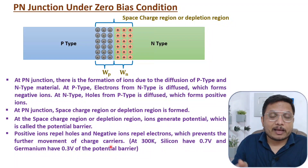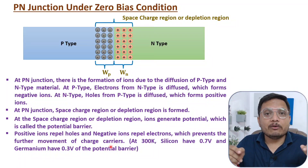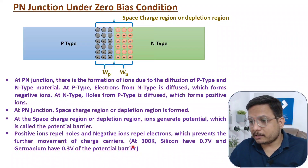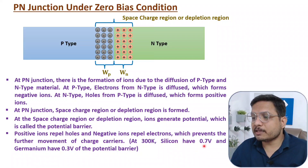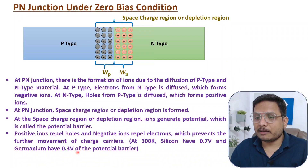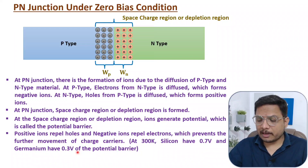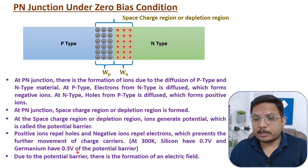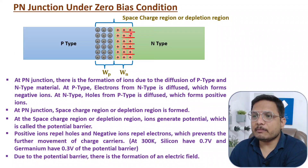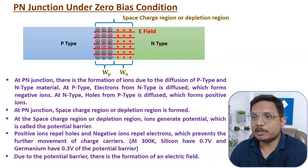Negative ions repel electrons and positive ions repel holes, forming a wall that does not allow flow of charge carriers. At 300 Kelvin, silicon has a potential barrier of 0.7 volts and germanium has a potential barrier of 0.3 volts. Due to this potential barrier, there is also formation of an electric field, which emerges from positive ions and goes toward negative ions.